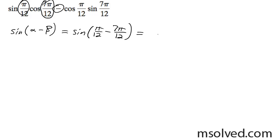And what you get from here is you're going to get the same thing as sine of negative 6 pi over 12, which is the same thing as sine of negative pi over 2.